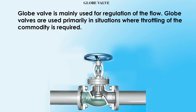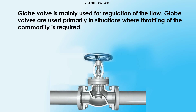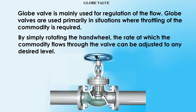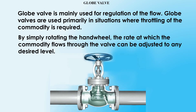Globe valves are mainly used for regulation of flow. Globe valves are used primarily in situations where throttling of the commodity is required. By simply rotating the handwheel, the rate at which the commodity flows through the valve can be adjusted to any desired level.